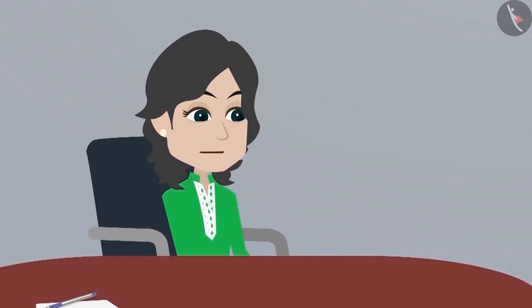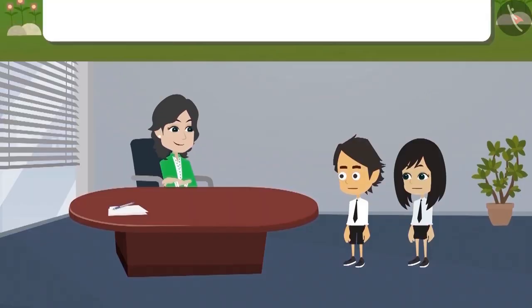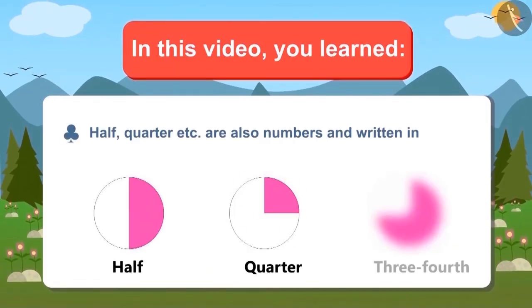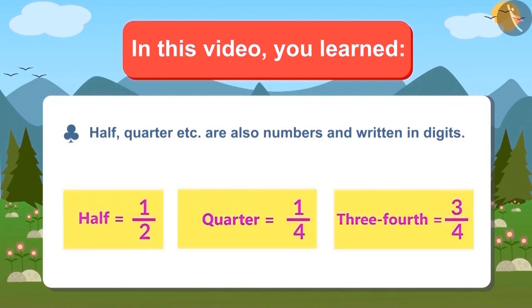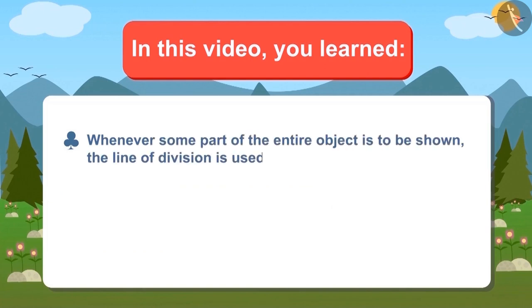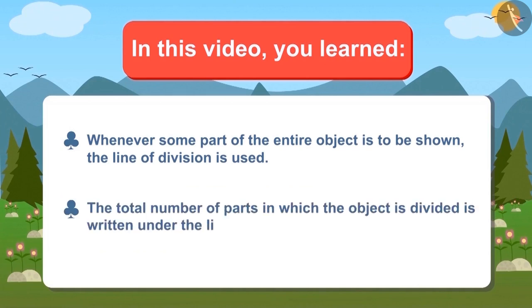Okay, madam. In this video, we have learned that half, quarter, etc., are also numbers and they can be written in digits. Whenever some part of the entire object is to be shown, then the line of division is used.